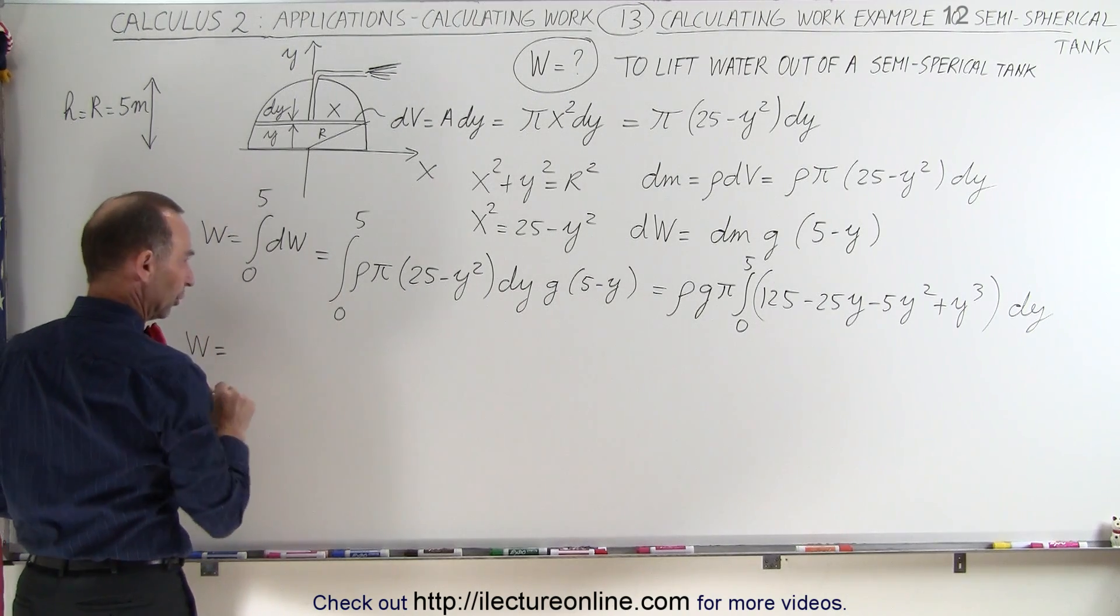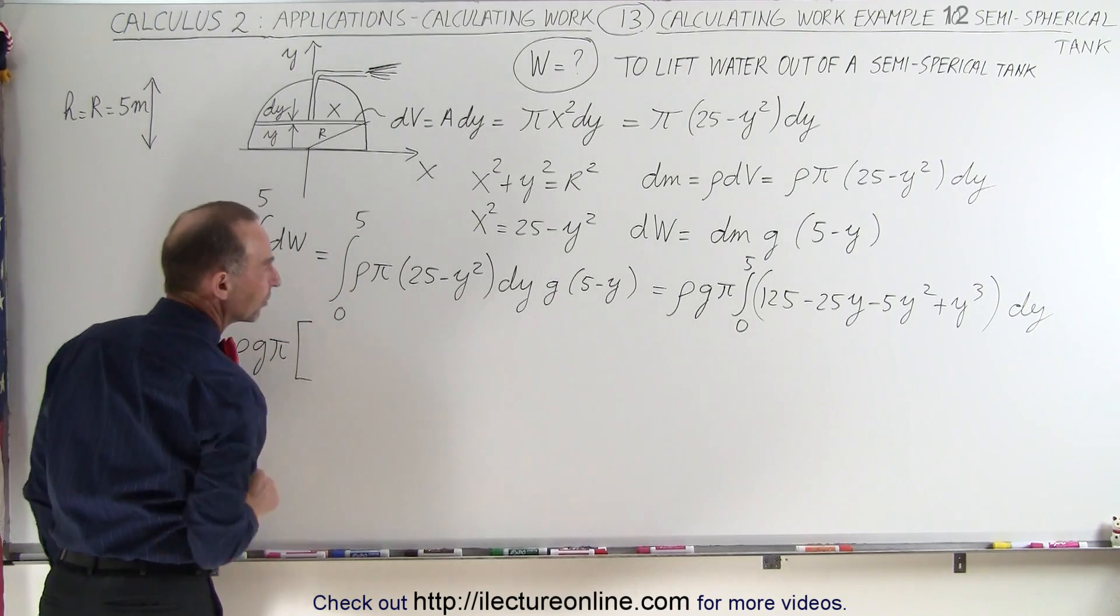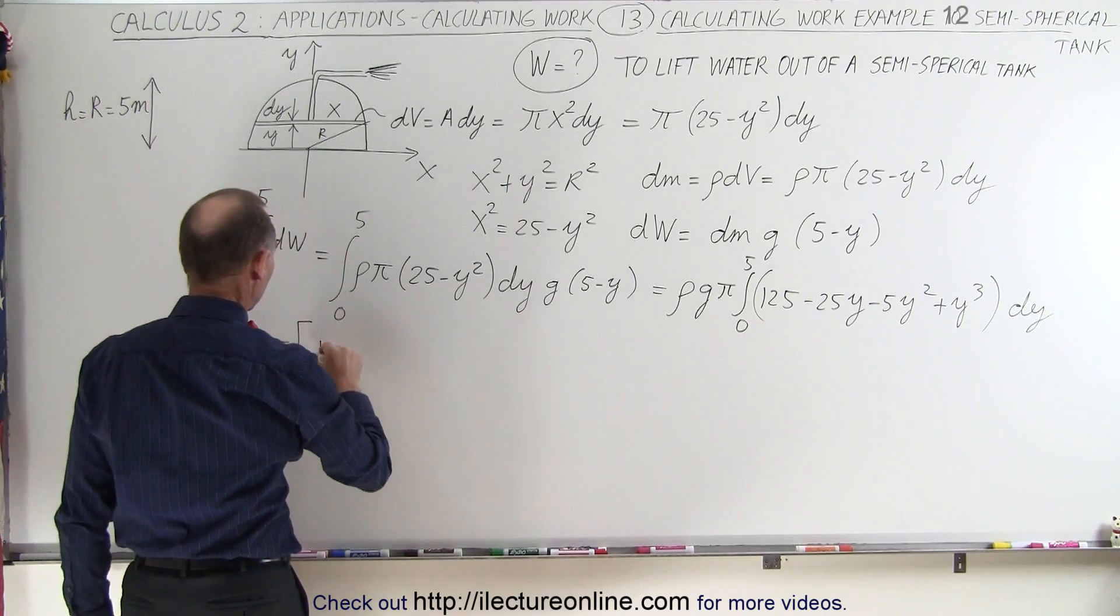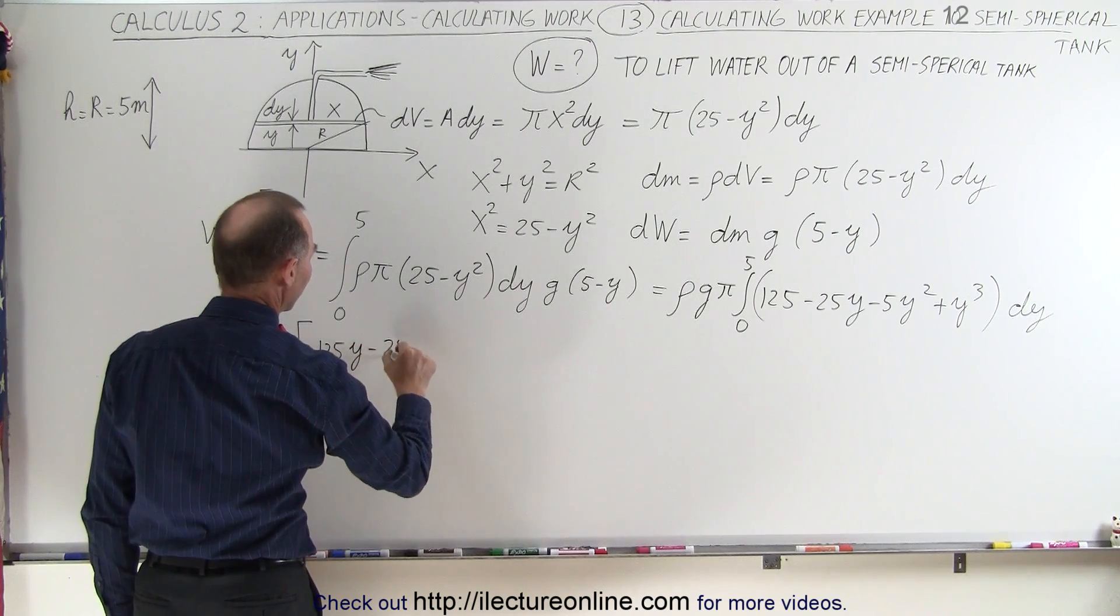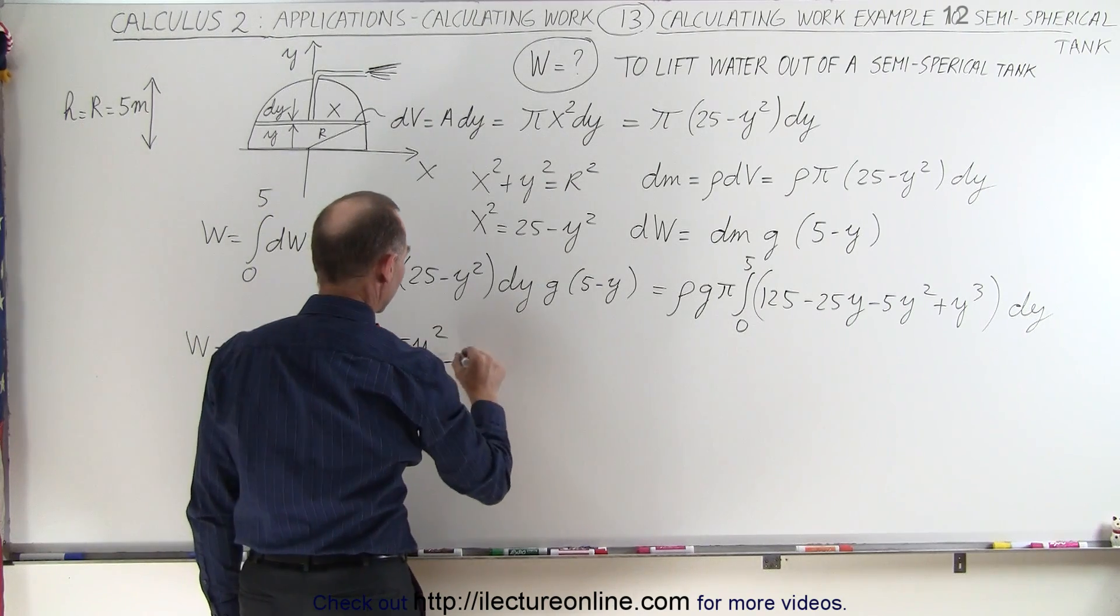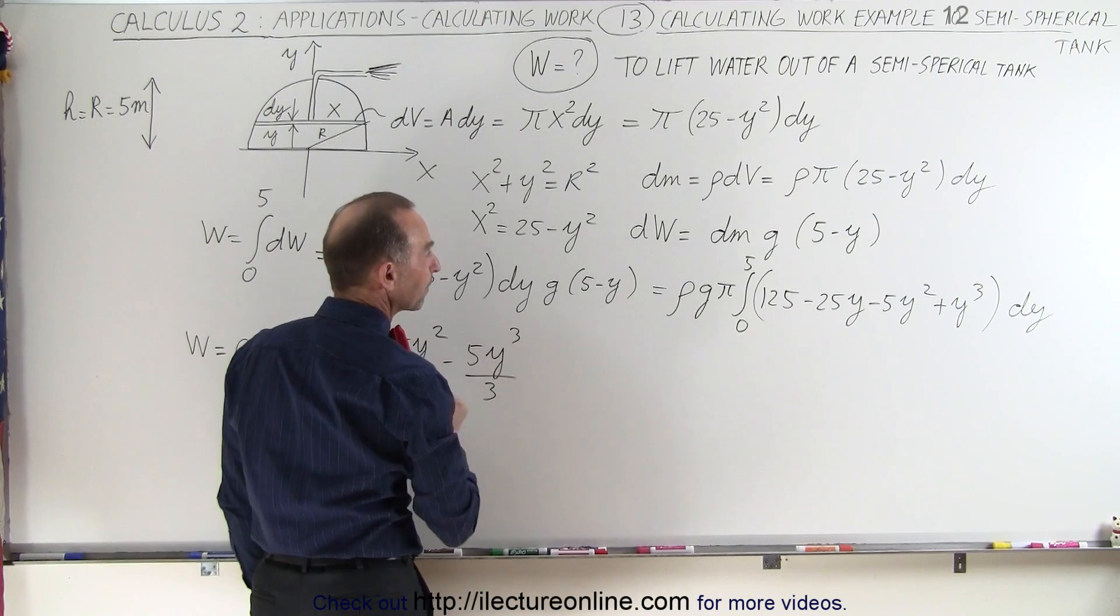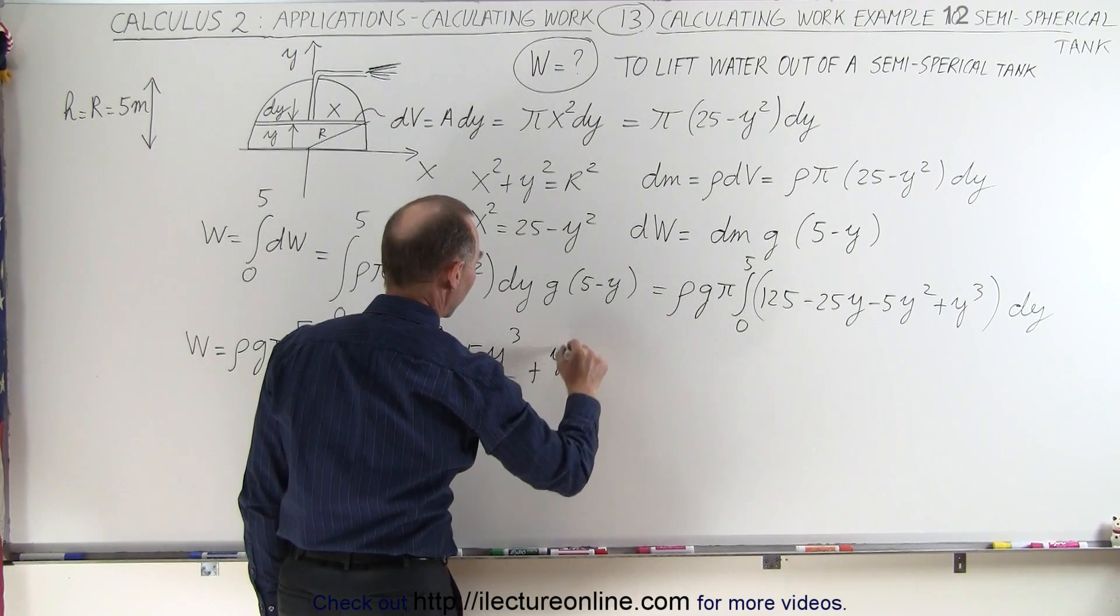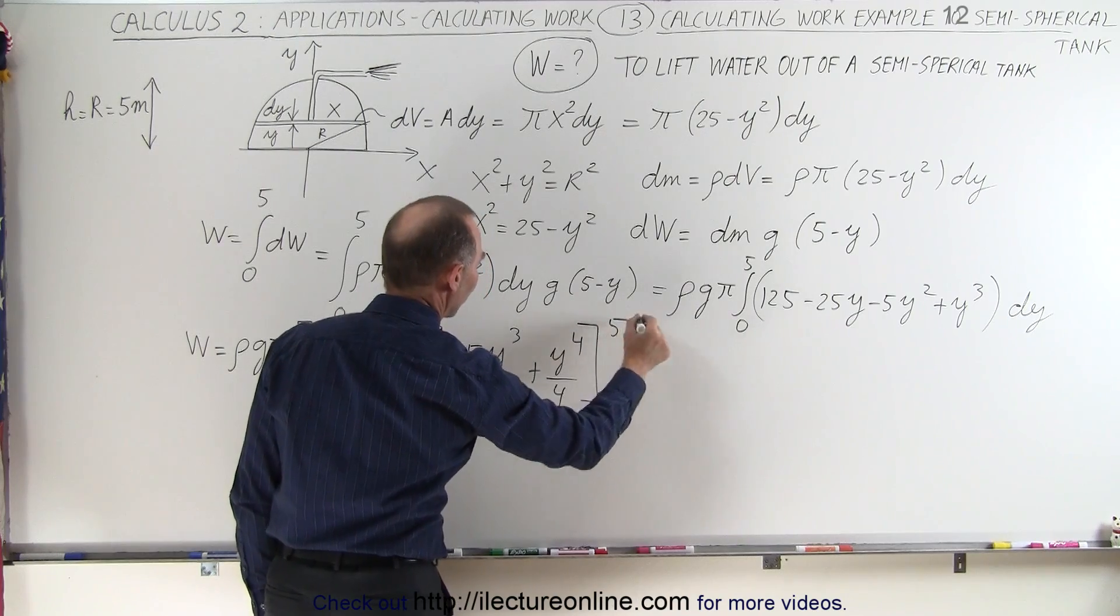So work done is equal to density times g times π times [125y - 25y²/2 - 5y³/3 + y⁴/4], evaluated from 0 to 5.